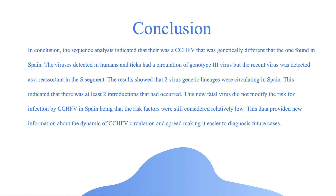In conclusion, the sequence analysis indicated that there was a CCHFV that was genetically different from the ones found in Spain. The viruses detected in humans and ticks had a circulation of genotype 3 virus, but the recent virus was detected with a reassortment in the S segment. The results showed that two virus genetic lineages were circulating in Spain, indicating that at least two introductions had occurred during that time. This fatal virus did not modify the risk of exposure or infection by CCHFV in Spain, as the risk factors were still considered relatively low. This data provides new information about the dynamics of CCHFV's circulation and spread, making it easier to diagnose in future cases.